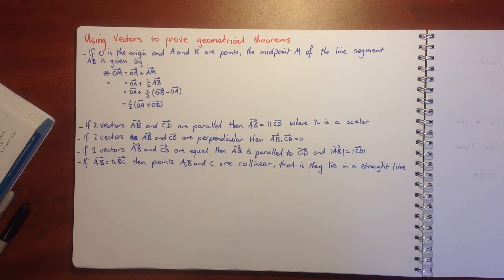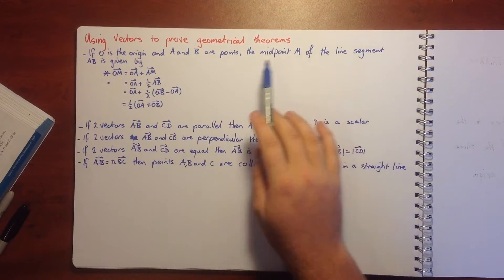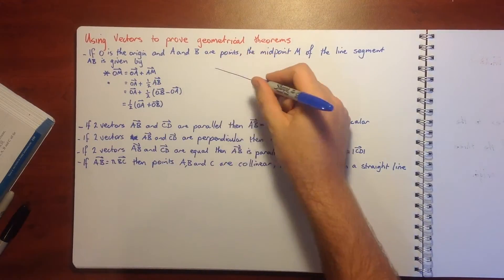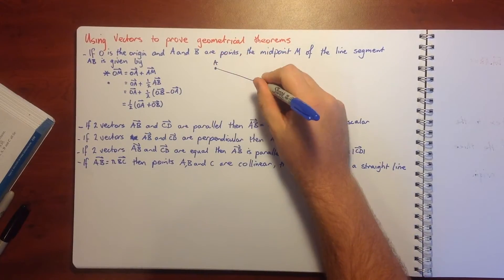Using vectors to prove geometrical theorems. Here's a few things we've worked on along the way that can be quite helpful for our geometric proofs. If O is the origin and A and B are points, the midpoint M of the line segment AB...